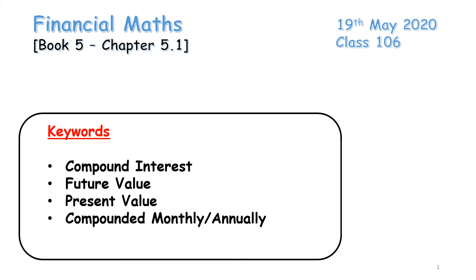Hi and welcome to today's class. It is the 19th of May and this is class number 106. Today we're going to start looking at financial maths. This would have been called applied arithmetic at third year. This is in book five, chapter five. It's a short chapter and we're going to rely heavily on what we have already learned from sequences and series. But first we're going to look at understanding the idea behind interest, future value and present value.